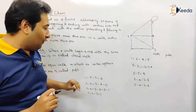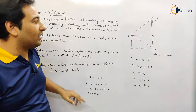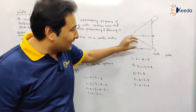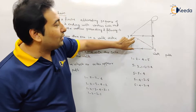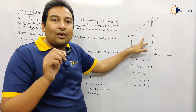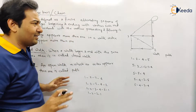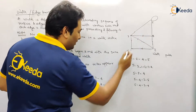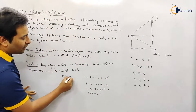Let us discuss this with the help of a graph. The first traversal is 1-2-3-4, meaning from 1 to 2, from 2 to 3, and from 3 to 4. In this traversal, the three edges are visited only once. We are only checking whether edges are visited once or not. Since all edges are visited once, it is a walk.